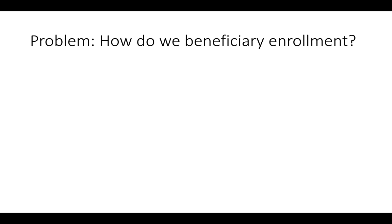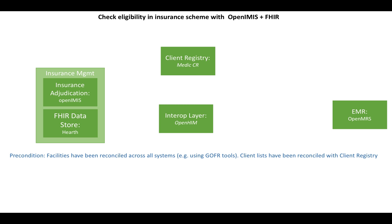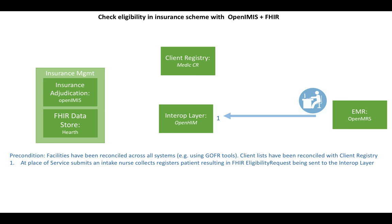One problem we have is how do we do beneficiary enrollment. We start with our insurance management system, comprised of OpenIMIS and HEARTH as a FHIR data store on the left. We have a client registry, interoperability layer, and for example an OpenMRS as an EMR system on the right. The client comes into the health clinic before services are rendered, and the data clerk needs to identify their eligibility in an insurance scheme against the insurance management system. The intake nurse collects demographic data and registers the patient, which generates a FHIR eligibility request sent to the interoperability layer.